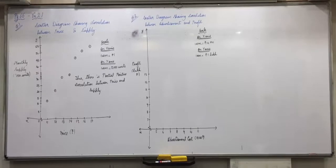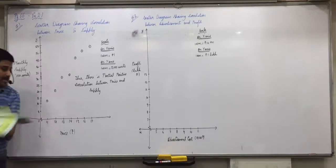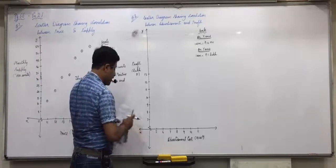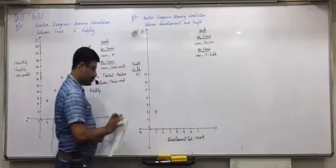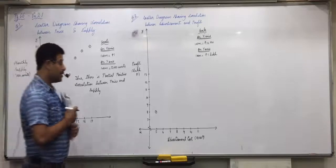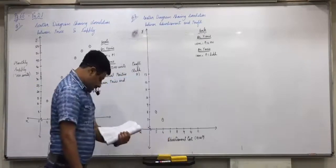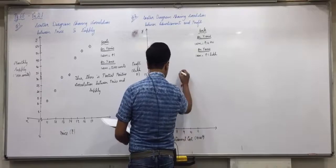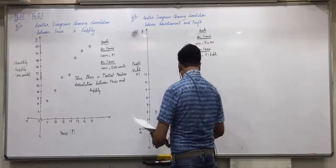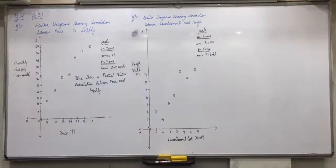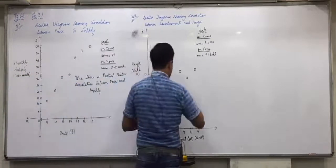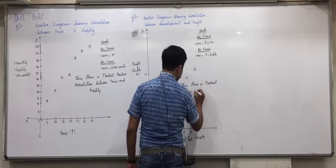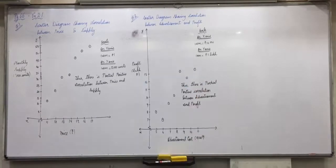Plotting Question 2 points: 5 and 8, then 6 and 7, then 7 and 9, then 8 and 10, then 9 and 13, then 10 and 12, and 11 and 13. The diagram shows partial positive correlation. Write below: 'Thus there is partial positive correlation between advertisement and profit.'